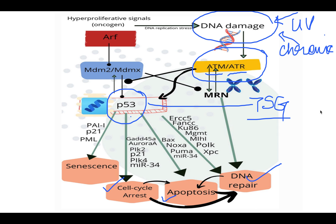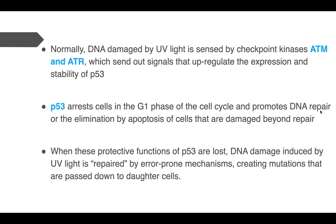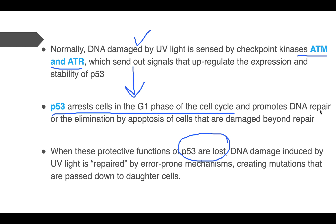If DNA repair doesn't take place, p53 sends the cell for apoptosis — killing the cell — or the cell goes into senescence. So the DNA damage is managed. However, in patients in which p53 is mutated, none of these processes take place. The DNA damage will continue, such cells will replicate, and this leads to cancer. P53 arrests the cell in the G1 phase; if its protective function is lost, mutations are passed to daughter cells.